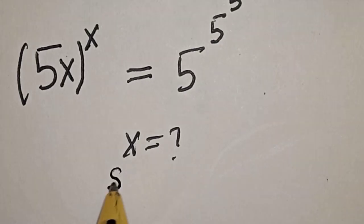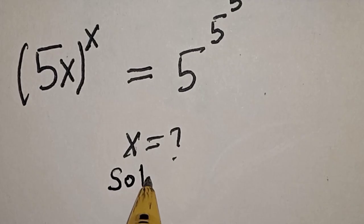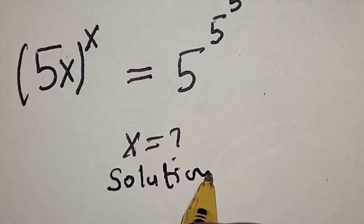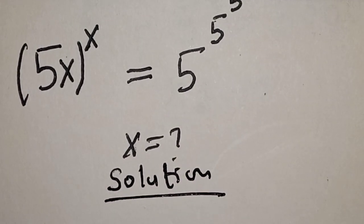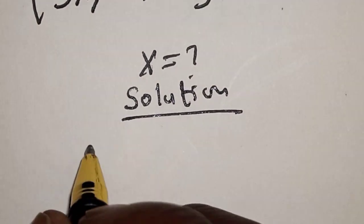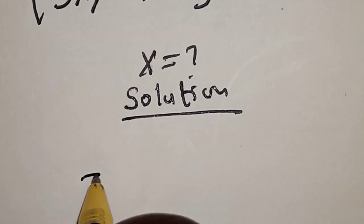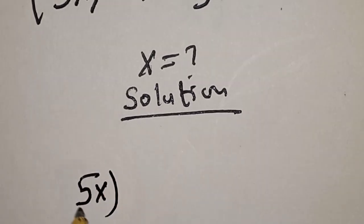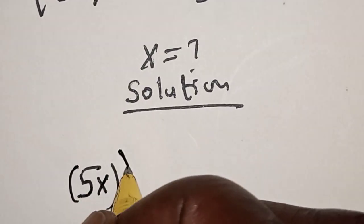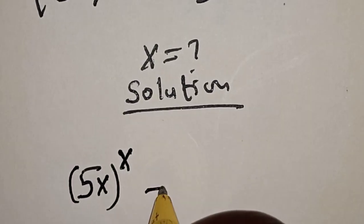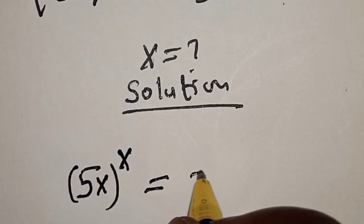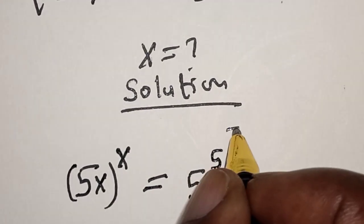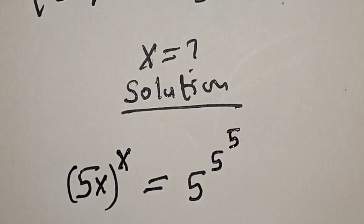Solution. We have the given equation: 5s raised to power s is equal to 5 raised to power 5 raised to power 5.